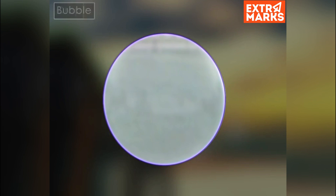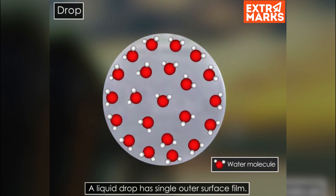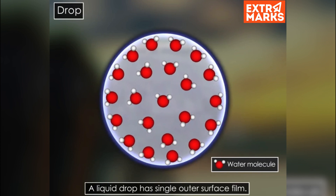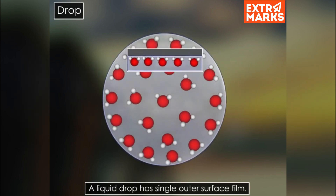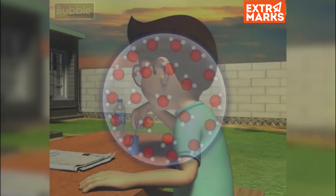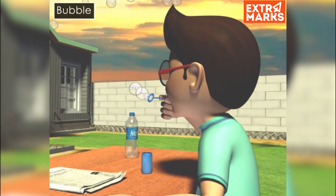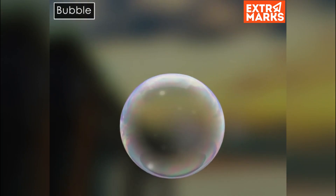A water drop is filled with liquid and possesses only an outer surface film. The film is composed of water molecules located at the outer surface; they adhere together to form a film and withstand against the atmospheric pressure for some time. A soap bubble is formed when air is blown into a soap solution.